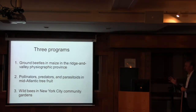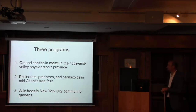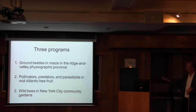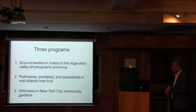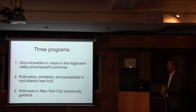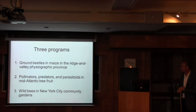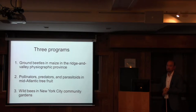I'm ambitious and going to try to get through all three studies. The first is ground beetles, family Carabidae, in a maize cropping system with the landscape context of ridge and valley physiographic regions in central PA. The second looks at a broader beneficial group — pollinators, predators, and parasitoids — responding to practices in mid-Atlantic tree fruit in south-central Pennsylvania. The third is a very different system: how wild bees respond to different conditions in community gardens throughout New York City.